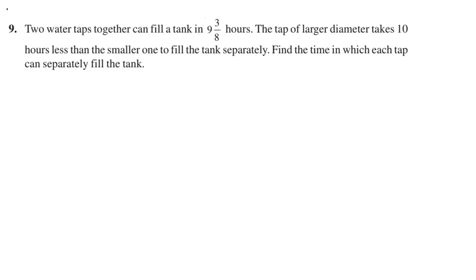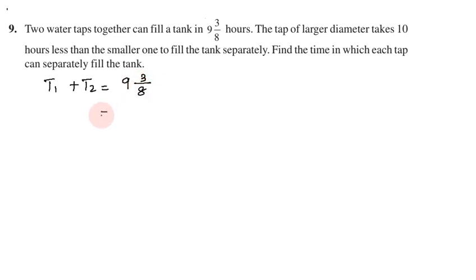Problem number nine: two water taps together can fill the tank in 93/8 hours. The tap of larger diameter takes 10 hours less than the smaller one to fill the tank separately. Find the time in which each tap can fill the tank. So two water taps together fill the tank in 93/8 hours, which as an improper fraction is 75/8 hours.